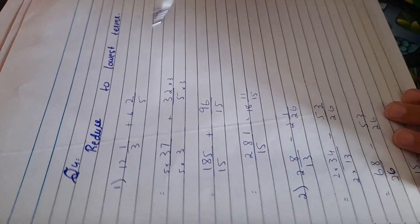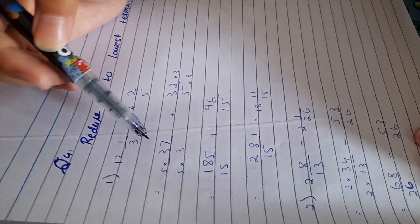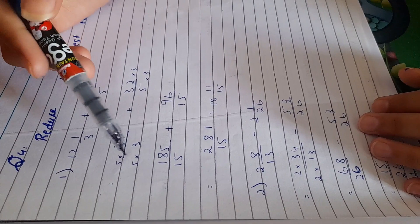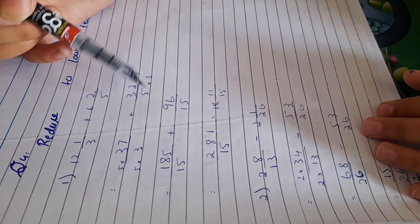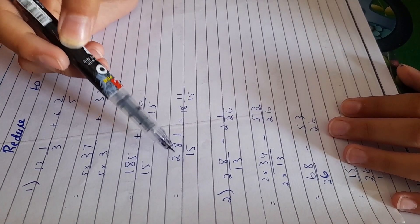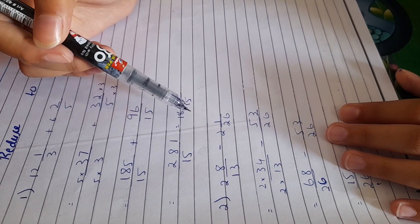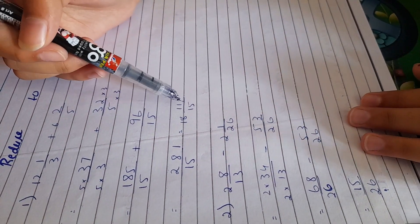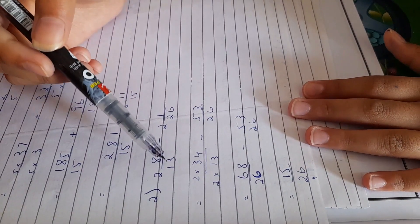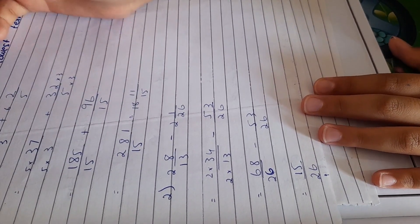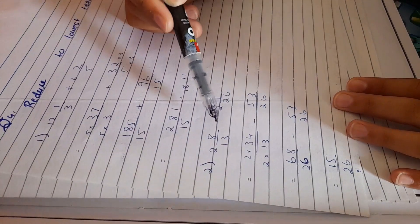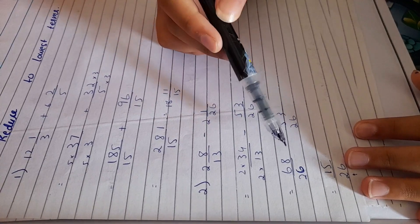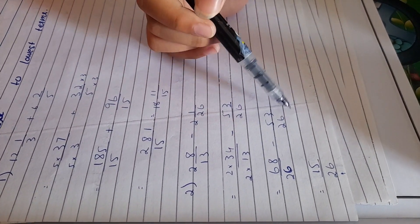Then here we have question number 4. Reduce to lowest terms. 12 and 1 by 3 plus 6 and 2 by 5. We are going to convert them into fractions, these mixed numbers into fractions. When we convert them into fractions, we have to make their denominators same. After making their denominators same, we have to add them. When we add them, we get the answer 281 by 15. It will be 18 and 11 by 15. Next, our question number 2 part. The second part of question number 4 is 2 and 8 by 13 minus 2 and 1 by 26. We convert them into fractions from mixed numbers and then we have to make their denominators same. It will be 68 by 26 minus 53 by 26, it equals 15 by 26.